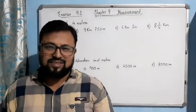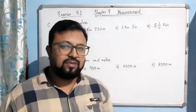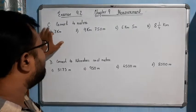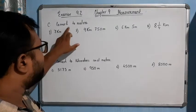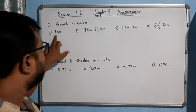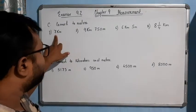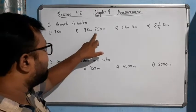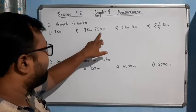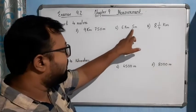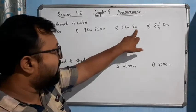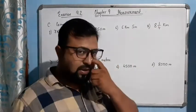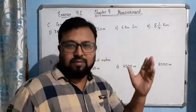Hello students, welcome to the next question of this exercise. Question number C: Convert to meters. We have four problems: 7 kilometers, 9 kilometers 750 meters, 6 kilometers 5 meters, and 8 and 1/4 kilometers.